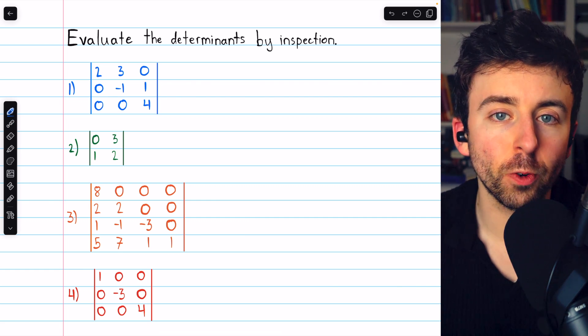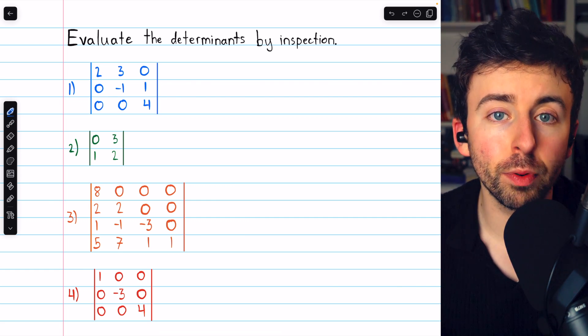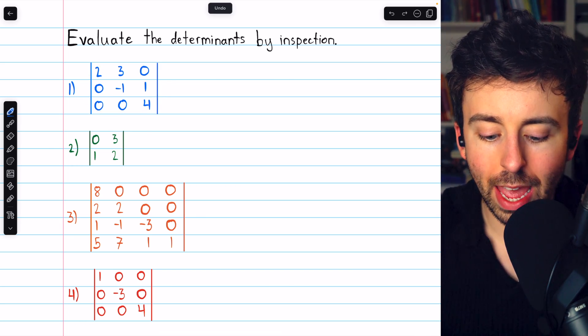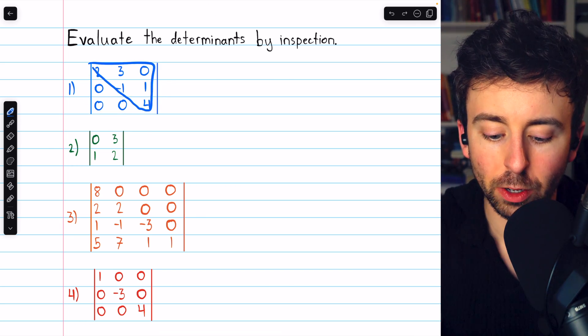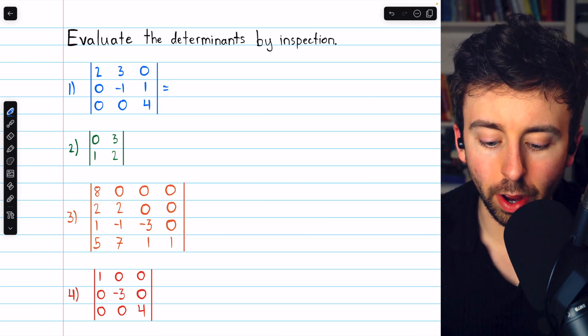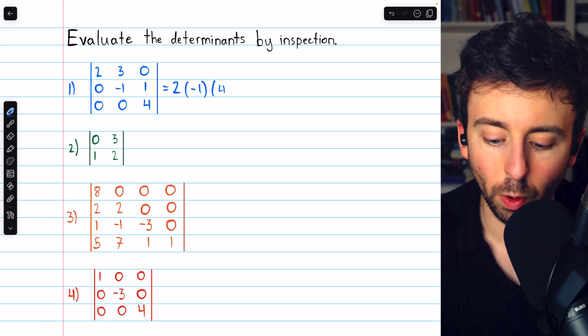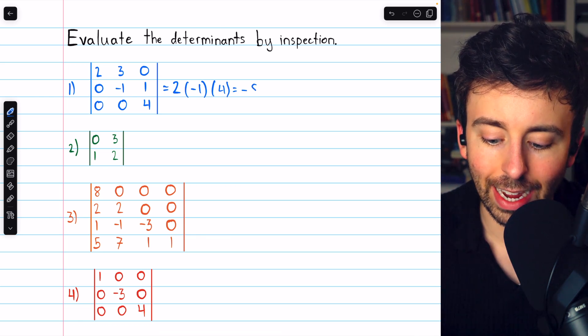The determinant of a triangular matrix, as we've discussed, is the product of its diagonal entries. Here in example one, we have an upper triangular matrix, so its determinant is just the product of its diagonal entries, 2 times negative 1 times 4, so the determinant is negative 8.